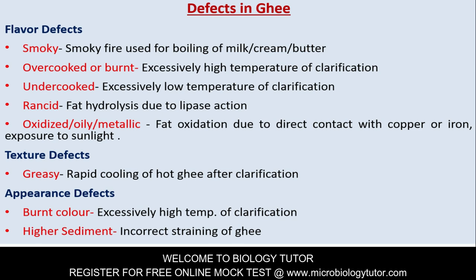Defects in ghee — flavor defects: smoky flavor due to fire used for boiling milk, cream, or butter; over-cooked or burnt flavor due to excessively high temperature of clarification; undercooked defect due to excessively low temperature of clarification; rancid flavor due to fat hydrolysis from lipase action; oxidized, oily, or metallic defect due to fat oxidation from direct contact with copper or iron or exposure to sunlight. Texture defects: burnt color due to excessively high temperature of clarification; higher sediment due to incorrect straining of ghee.